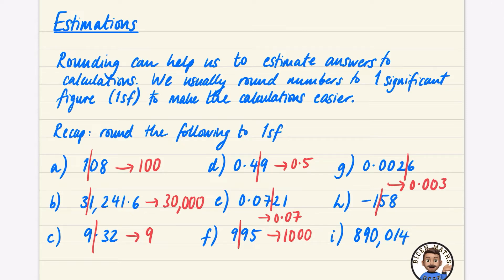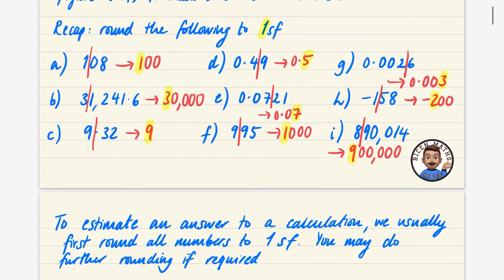You can have negatives as well. For -150, we draw the line after the one; the five makes it round to a two, so it's -200 — it is closer to -200 than to -100. For 890,014, we draw the line after the eight; the nine makes it round up to 900,000. Notice that all answers to one significant figure have just one non-zero digit with the rest as zeros.